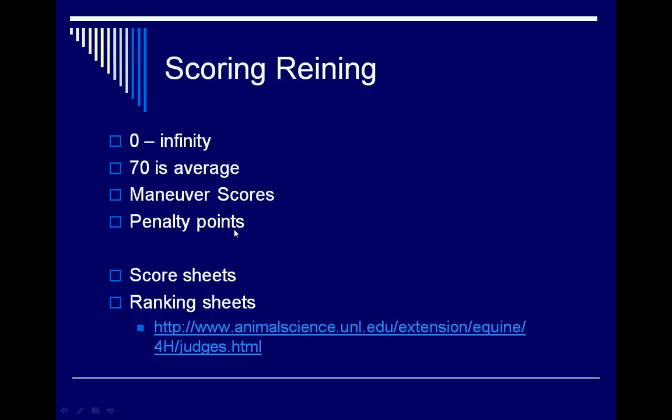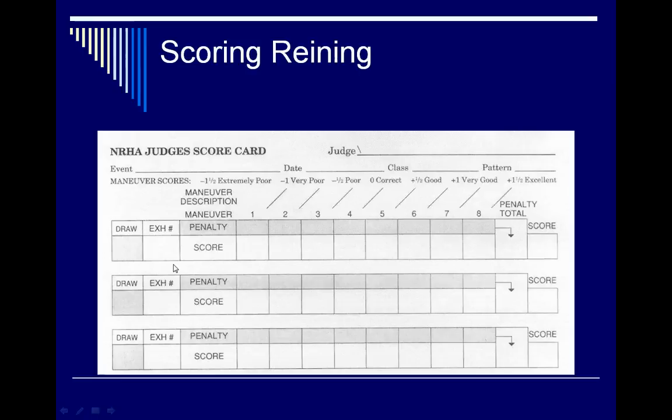Maneuver scores evaluate the quality of each maneuver that a horse performs, and penalty points are only assessed if a horse does certain things incorrectly — always on a negative basis. We also have various ranking sheets available on the website that an individual can use when judging reining.